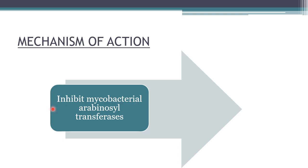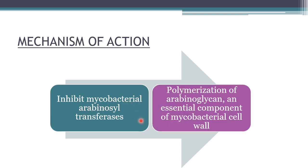Ethambutol inhibits mycobacterial arabinosyl transferase, an enzyme required for the polymerization of arabinogalactan — an essential component of the mycobacterial cell wall. By inhibiting arabinosyl transferase, ethambutol inhibits the polymerization of arabinogalactan and thus disrupts cell wall synthesis.